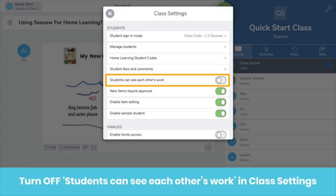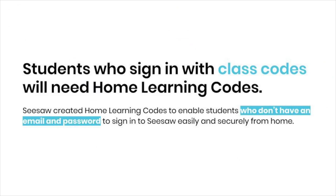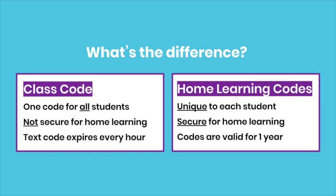You can skip the rest of this step if your students do not use email to sign in — you will need home learning codes. We created home learning codes to allow students to log into the Seesaw class app securely from home. Your class code is one code for all students, which works great in the classroom, but when students are learning at home, you need a more secure way for students to log in. Home learning codes are unique to each student, so you don't need to worry about any log in mistakes.